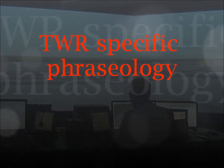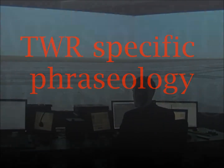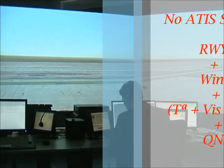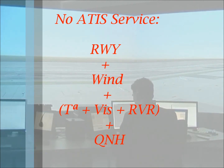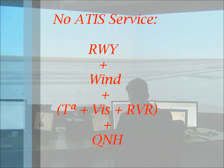Now I'm going to focus on tower-specific phraseology, and we are going to see different tower situations from the beginning. Let's start with departure information. If there are no ATIS services when the pilot requests airfield information, the controller's answer is going to include: runway, wind, temperature, visibility, runway visibility range if necessary, and QNH. The readback from the pilot should be runway and QNH.